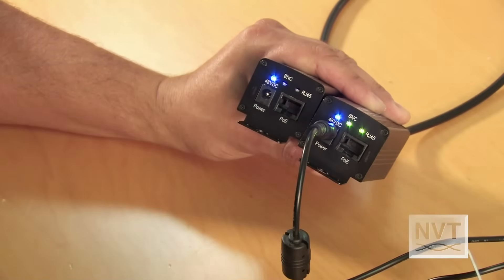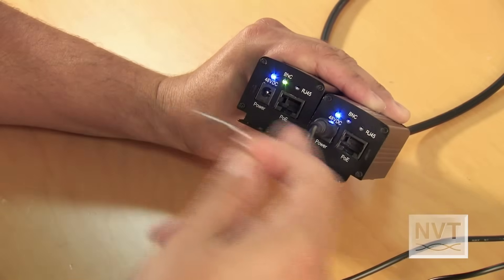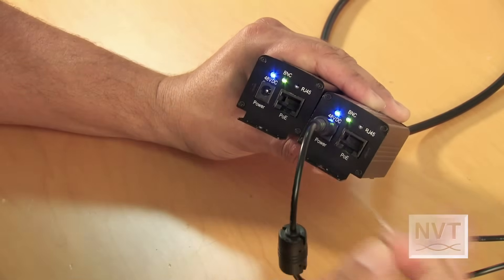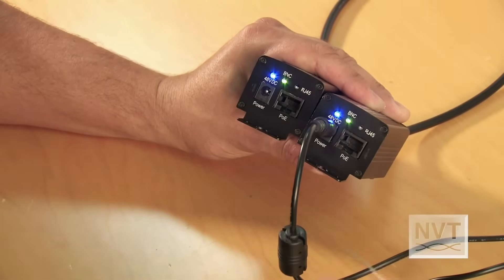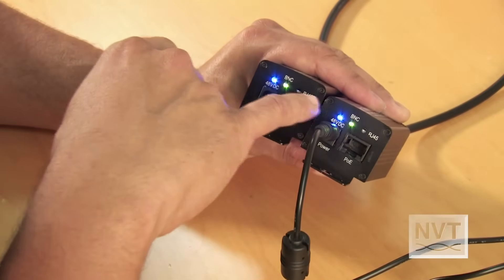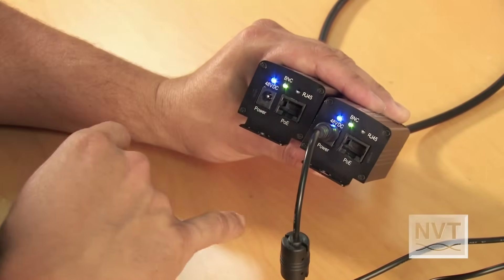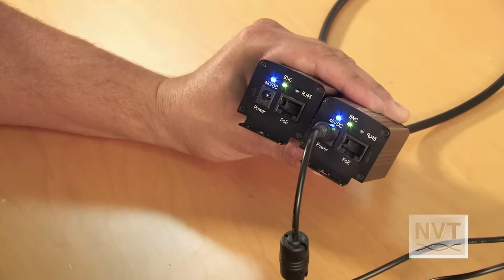The way that you know that it's been successful is when you get a solid BNC light on both transceivers. It can take anywhere between ten seconds to a little bit longer than that for that to occur. As you can see right now, I have solid BNC LED on both sides. So these transceivers are joined and on the same private network.